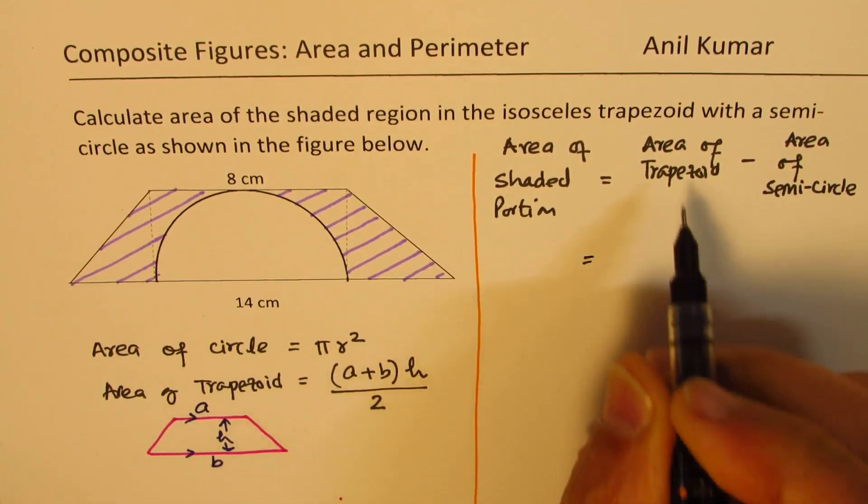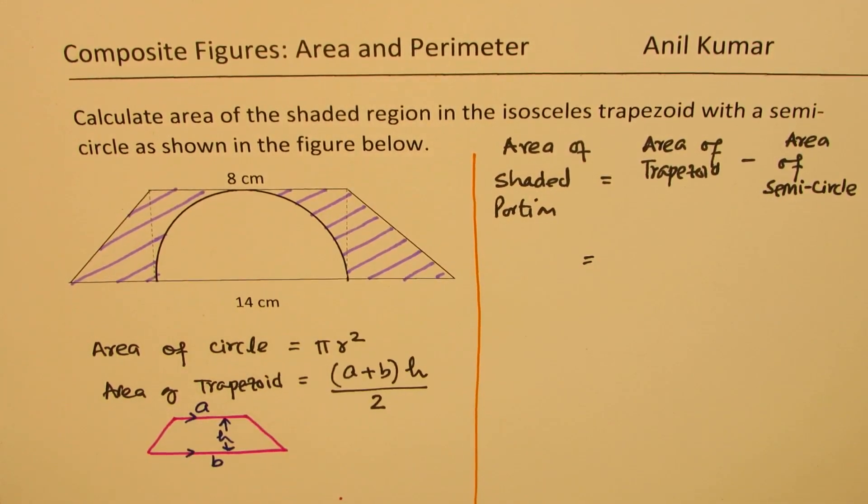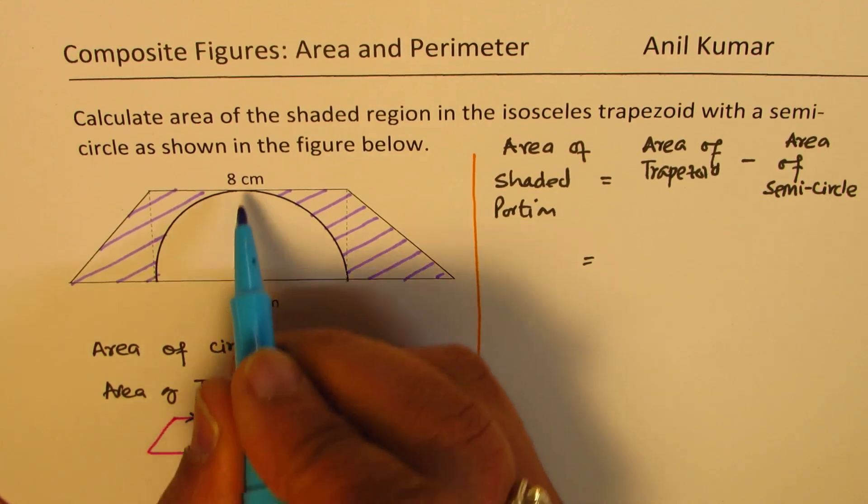So area of trapezoid, how do we figure this out? We need to still find the height. So first exercise is to find the height. Now how do we find height?